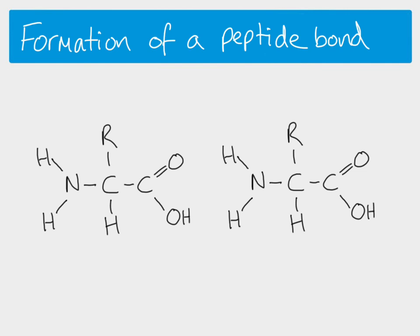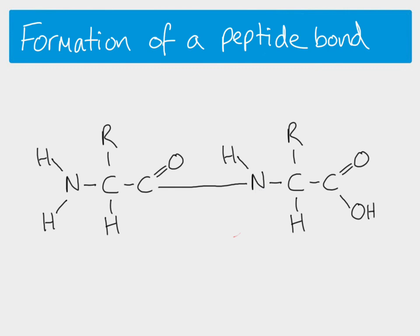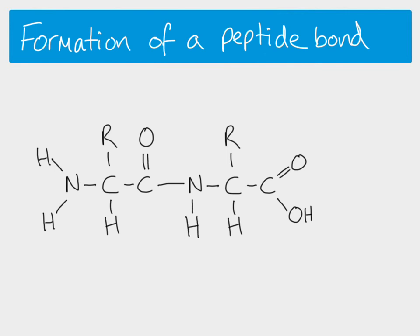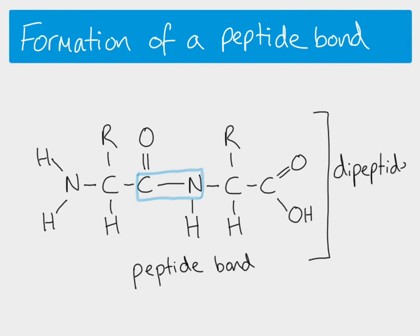This is how a peptide bond is formed. The hydroxyl group from one amino acid and a hydrogen from the amino group of the other amino acid are removed, and therefore the carbon and the nitrogen form a bond. Because we've removed an OH and an H, that means we're removing water, which means this is a condensation reaction. The peptide bond is the bond between the carbon and the nitrogen, and we now have our dipeptide.